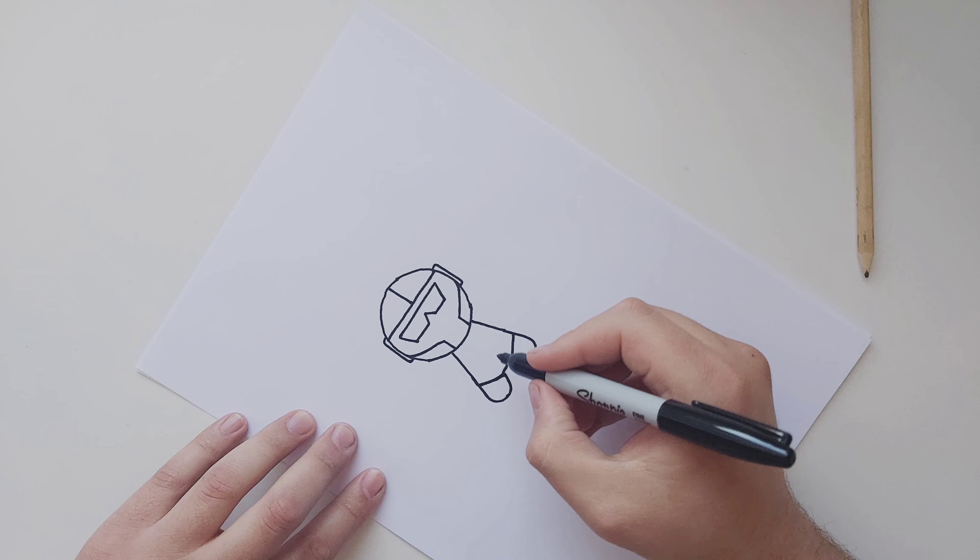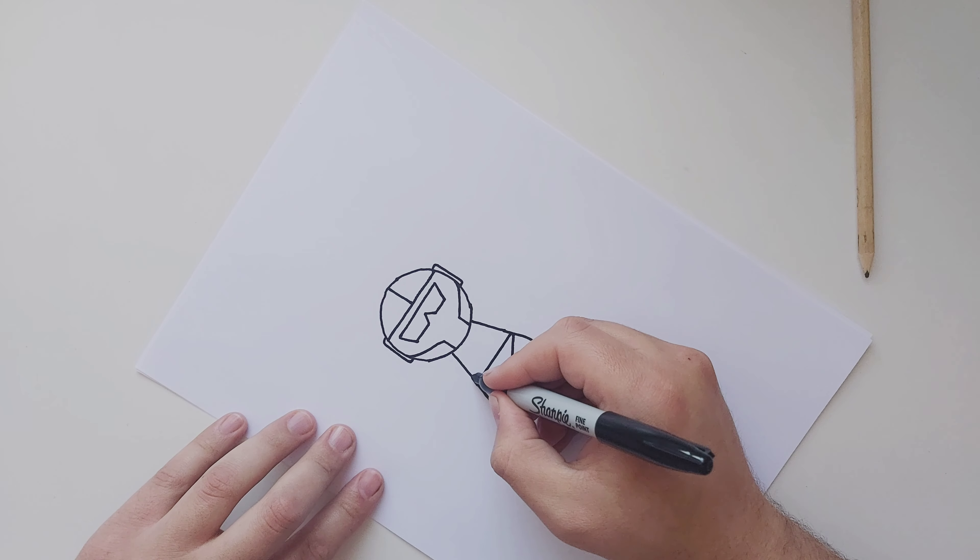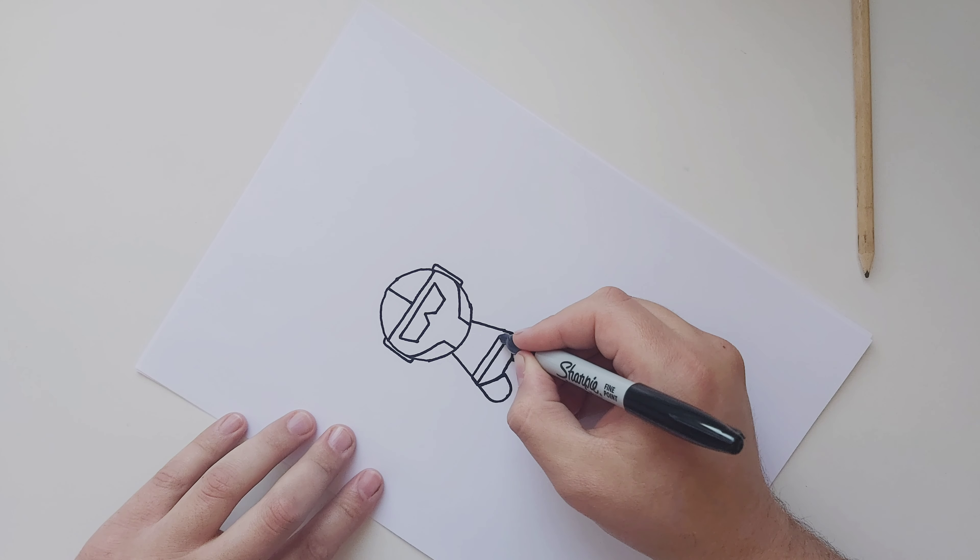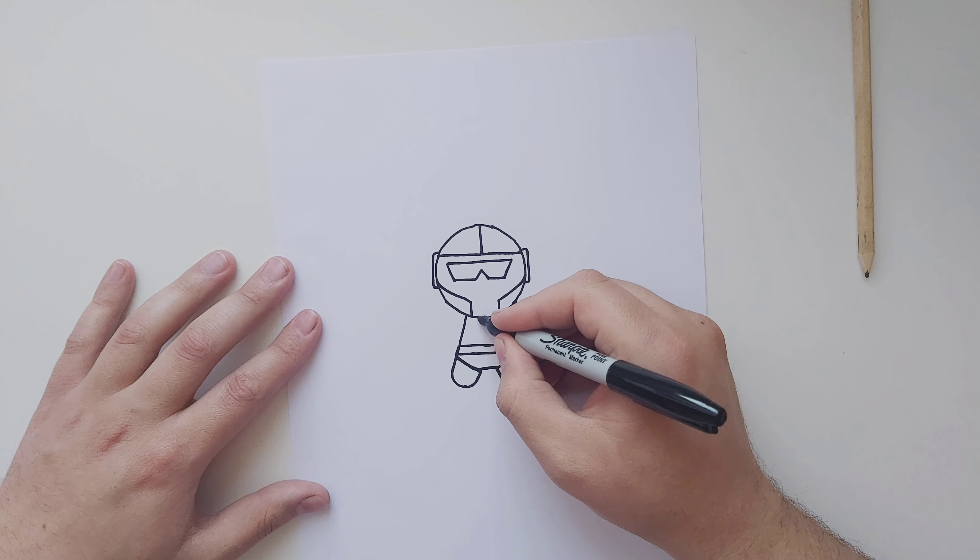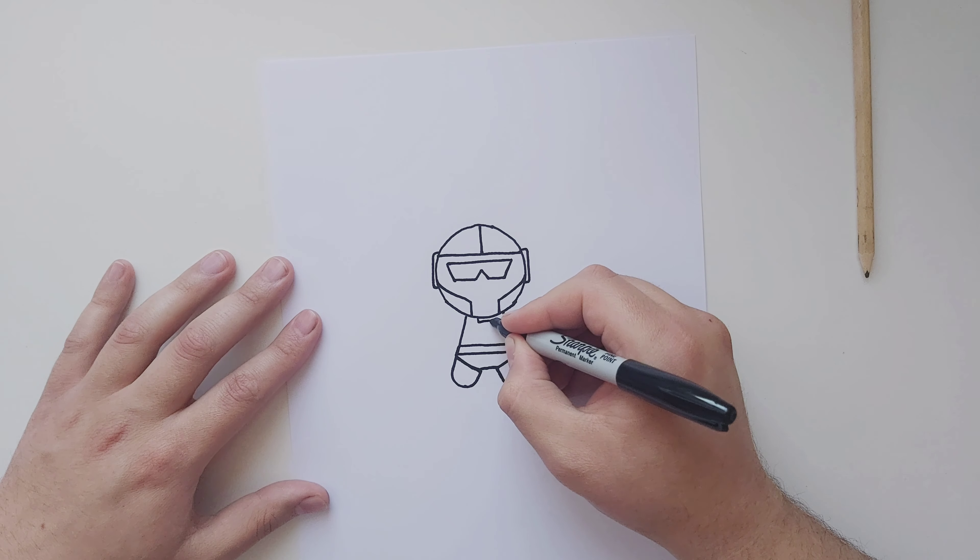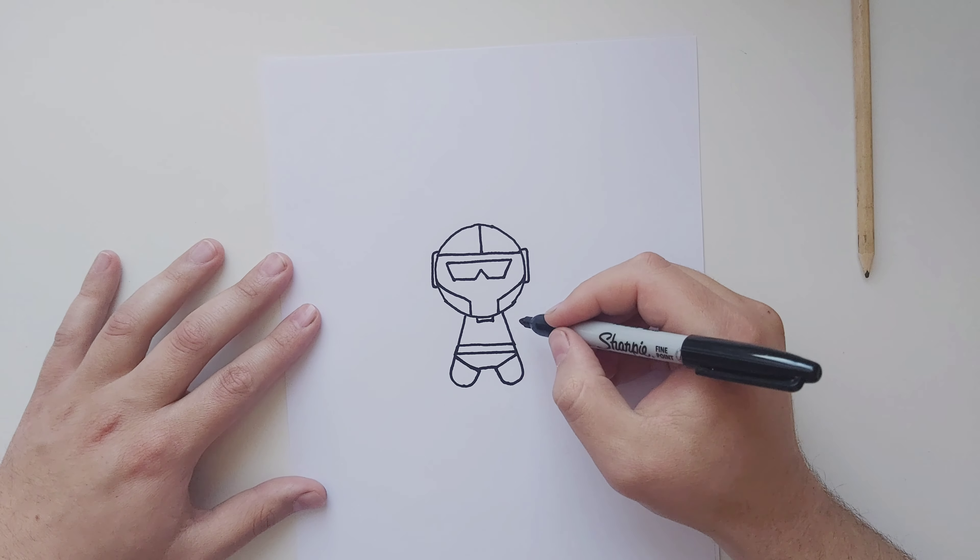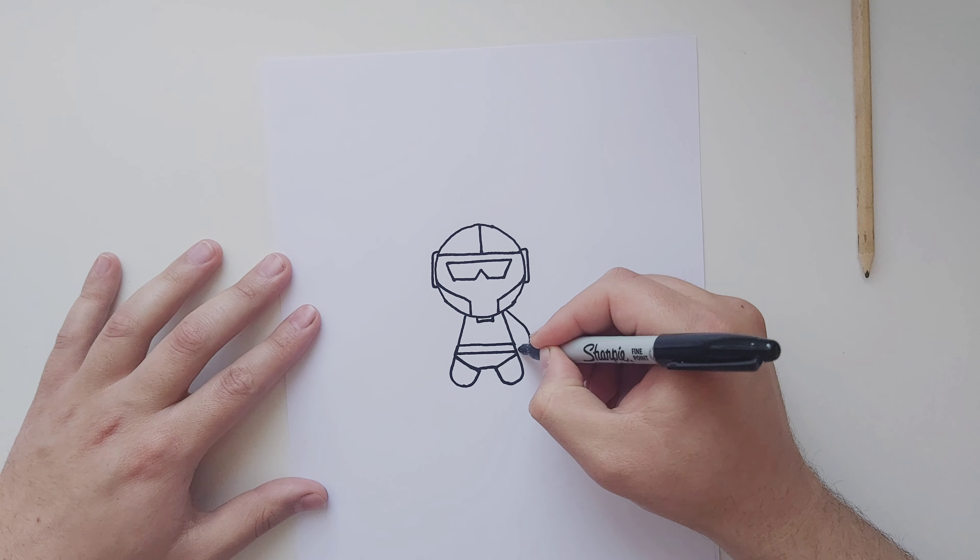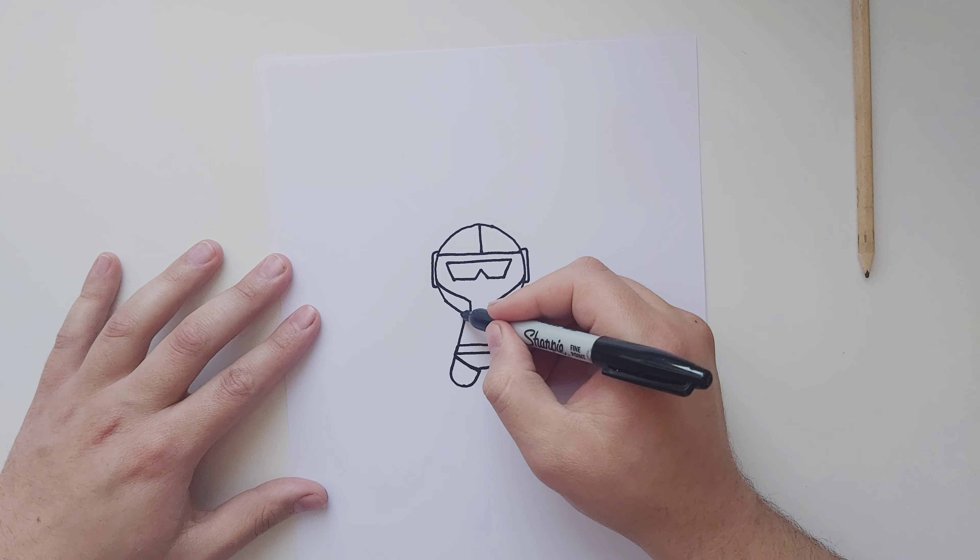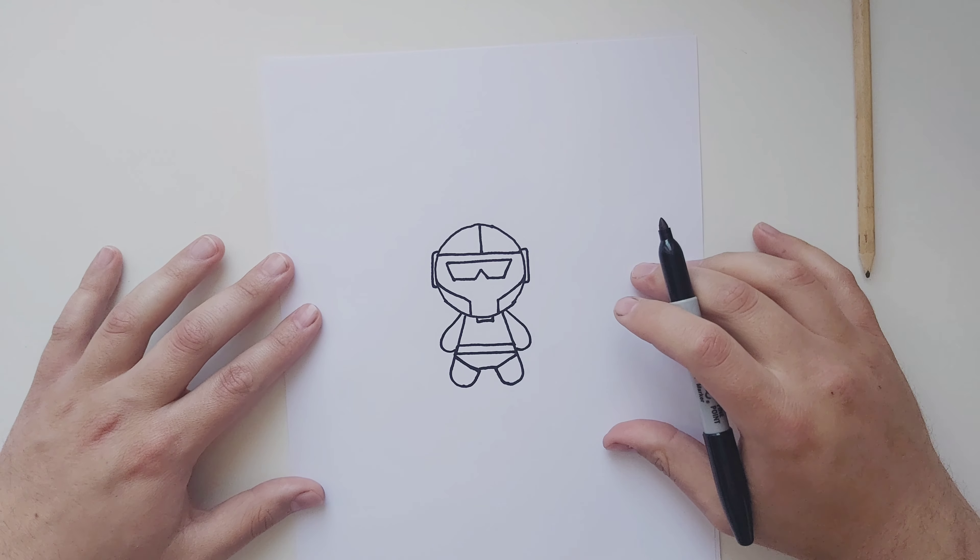Now we'll be drawing his belt. That's two lines across his body and color a U-shape square U. Now his arms, line down and curve back. Again on the other side, line down and curve back.